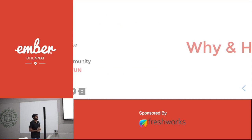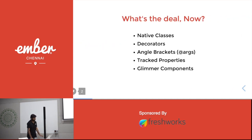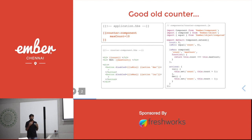These are all the features we are going to see about Octane today. This is a classic Ember component model used to define a counter component. This counter component is going to accept an argument max count up to which the counter can be incremented, and also the counter can be decremented till 0. This implementation has two computed properties and two actions. We are going to convert this classic Ember component into an Octane component step by step.